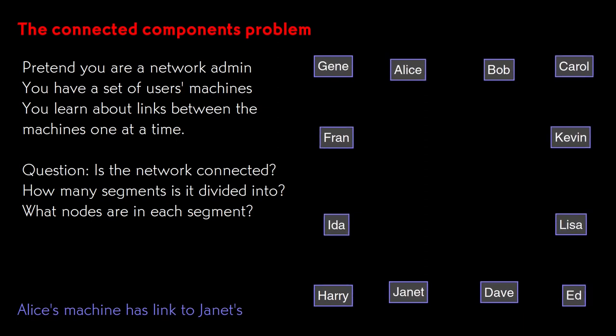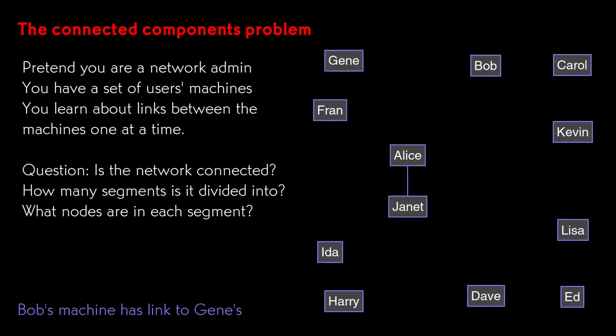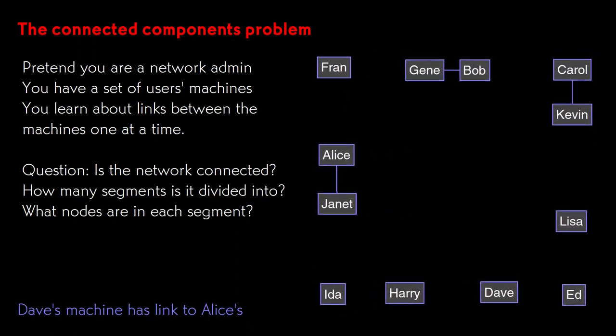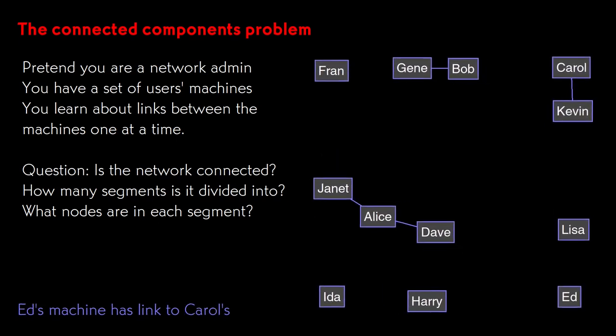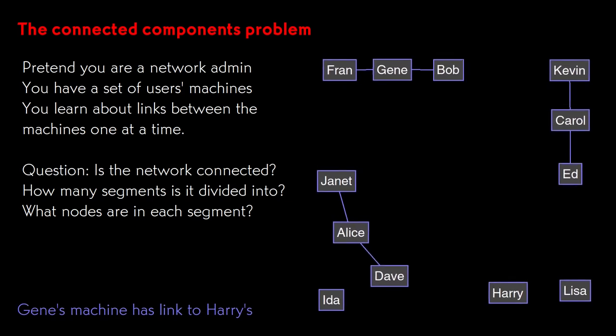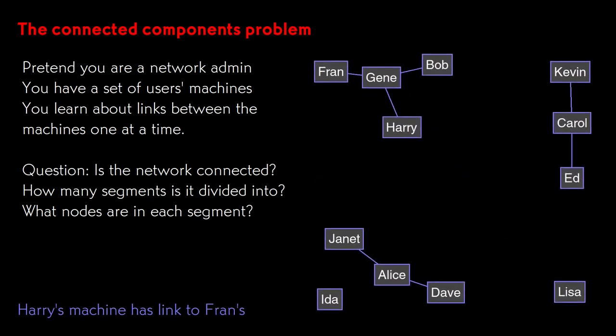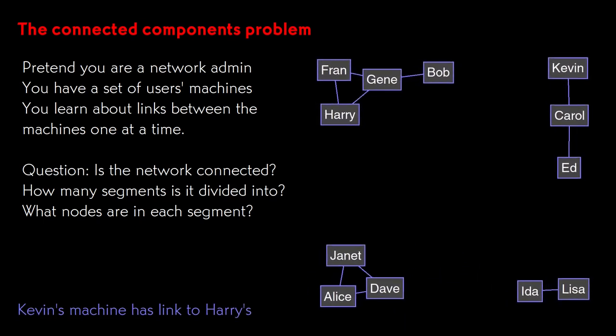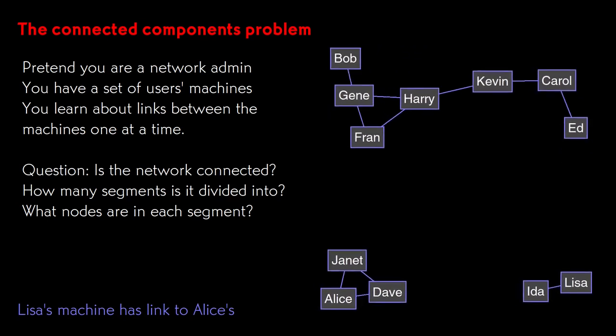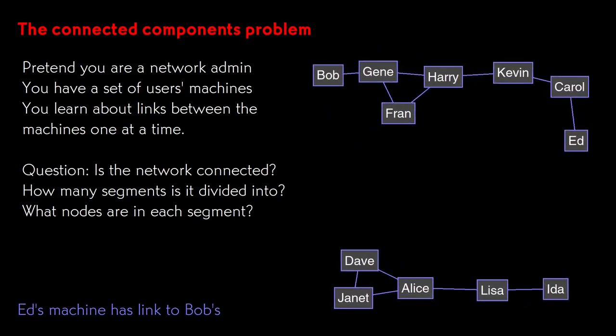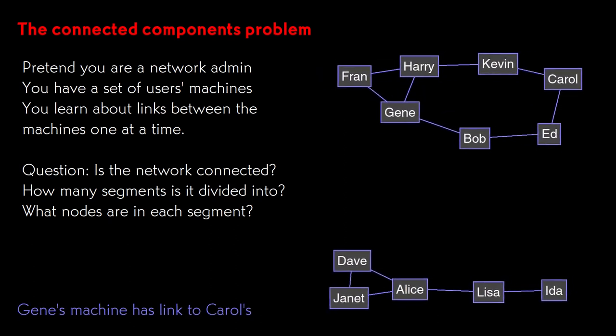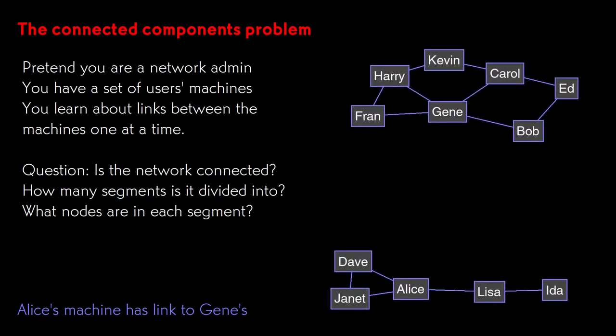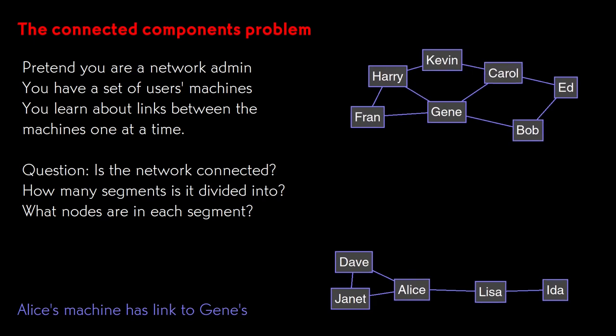For instance, in this network, you learn that there is a link between Alice's Machine and Janet's, one between Bob's and Jean's, one between Carol's and Kevin's, and so on. You want to find out when you finally have the link that joins the network. For instance, here, a link from Alice's Machine to Jean's will connect everything.